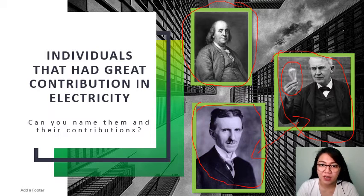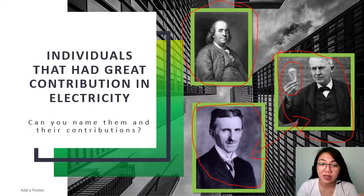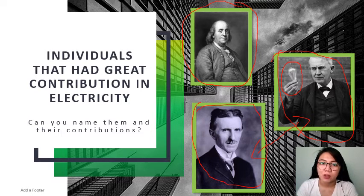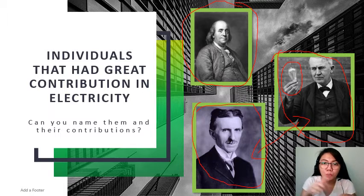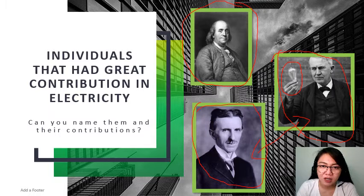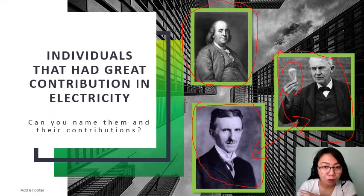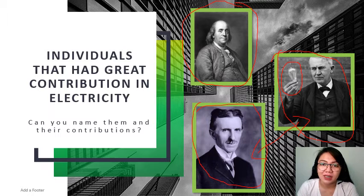Nikola Tesla was an engineer and scientist known for designing the alternating current, or AC electric system. This is the predominant electrical system used until now across the world — a truly massive discovery. He also created the Tesla coil, which is still used in radio technology today.